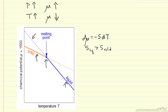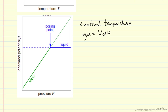We can look at a similar diagram at constant temperature showing how chemical potential changes with pressure. For a single component over a narrow range of pressures, comparing liquid and vapor: at higher pressure, liquid is stable because the vapor phase chemical potential is much higher. At lower pressure, vapor is the stable phase because it has the lower chemical potential. At the boiling point, the chemical potentials are equal. The slopes differ greatly because the volume of the vapor is much larger than the volume of the liquid, giving the vapor a much steeper positive slope.